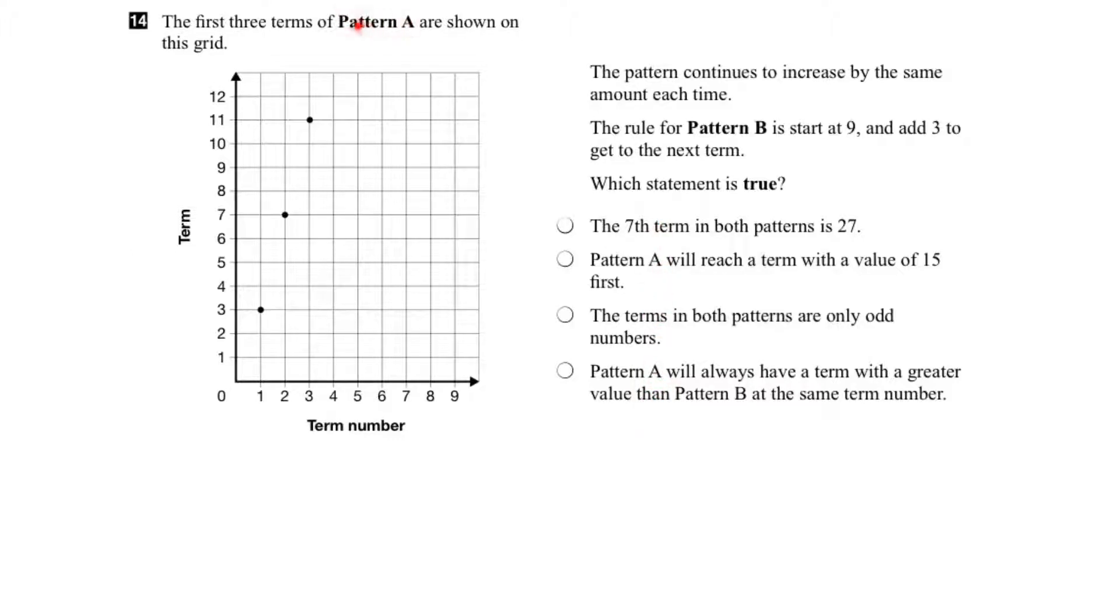Let's start with Pattern A. The first three terms are shown in the grid. Let's set this up where we look at the term number and the value in each of the patterns. For term number 1, the value is 3 for Pattern A. So term 1, value 3.